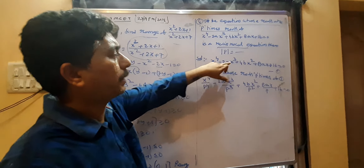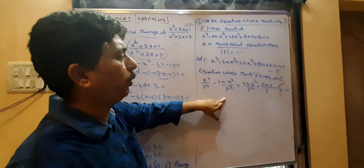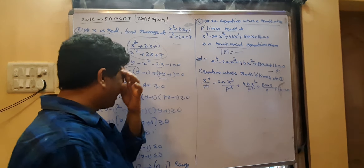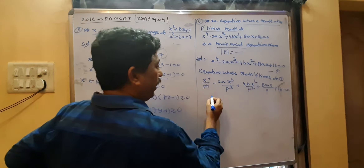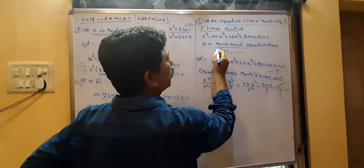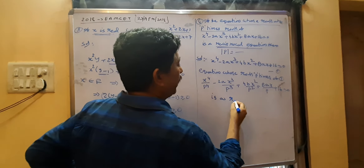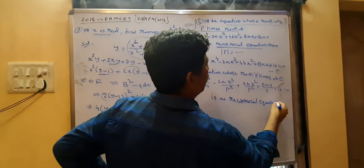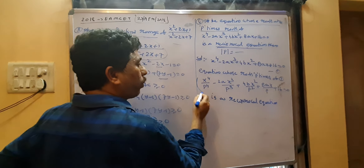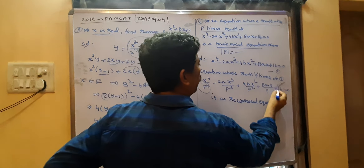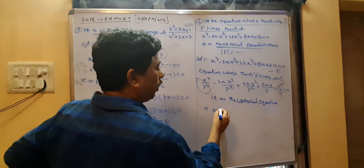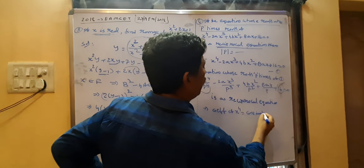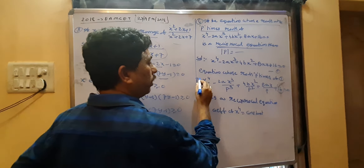After substitution we have x⁴/p⁴ as the leading term and 16 as the constant. For a reciprocal equation, the coefficient of the highest power equals the constant term. That means the first term coefficient equals the last term: 1/p⁴ equals 16.